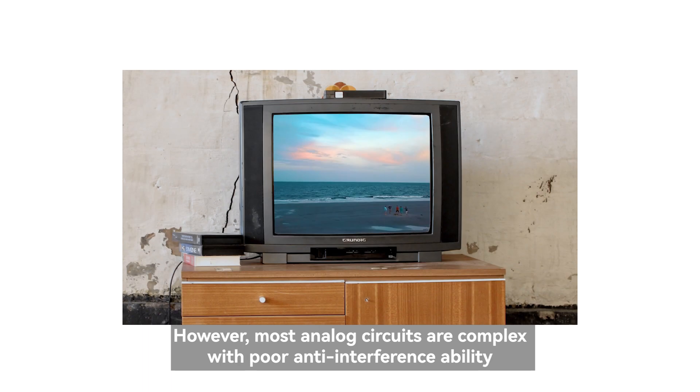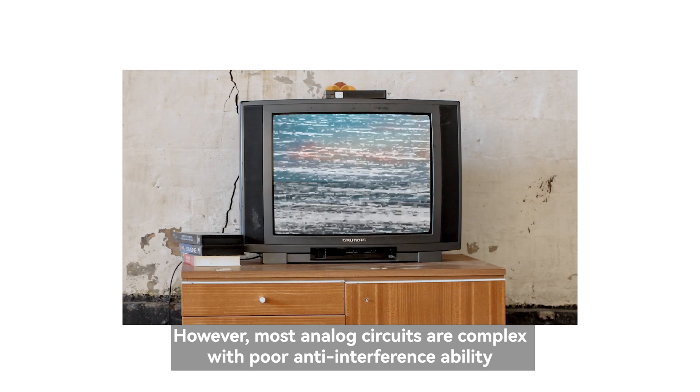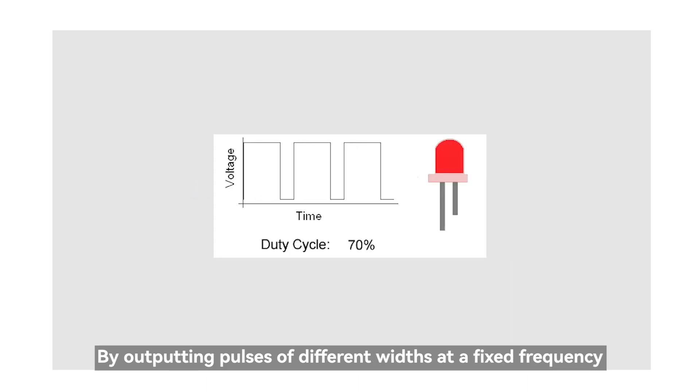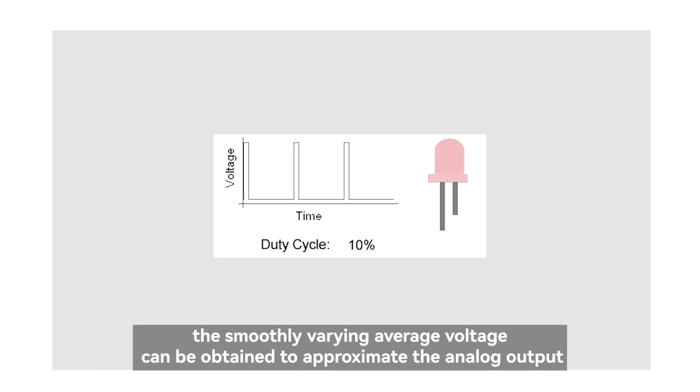However, most analog circuits are complex with poor anti-interference ability. So the pulse width modulation technology came into being. By outputting pulses of different widths at a fixed frequency, the smoothly varying average voltage can be obtained to approximate the analog output.